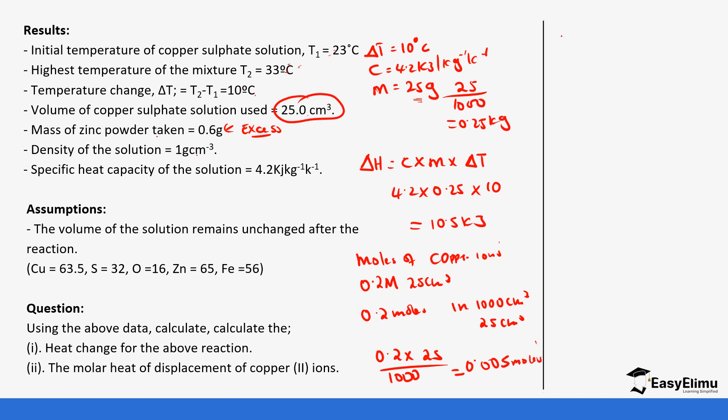So if 0.005 moles of copper is displaced to give 10.5 kilojoules, what about one mole? So this is the same as 10.5 divided by 0.005, which gives us 2,100 and it is kilojoules per mole. And remember since the temperature is increasing, it tells us that this is an exothermic reaction. So the answer will be negative. So that's how you calculate the displacement.